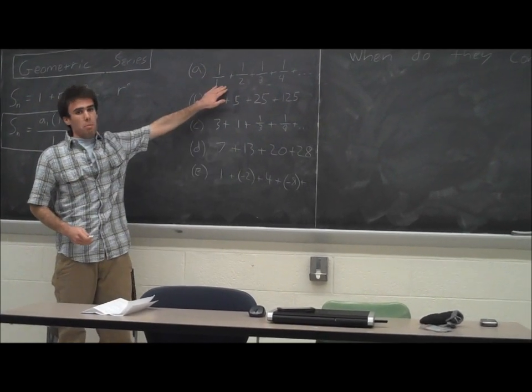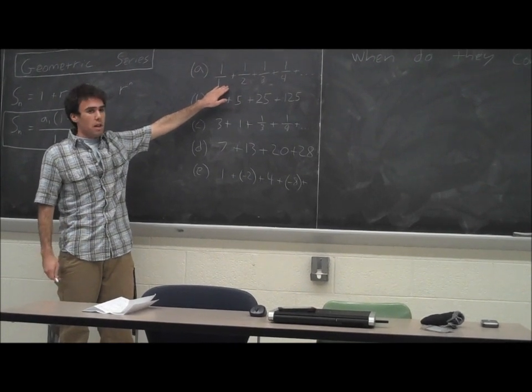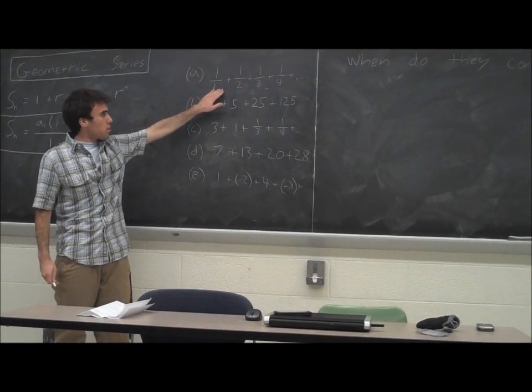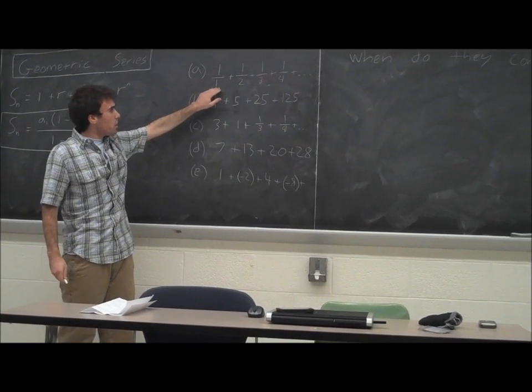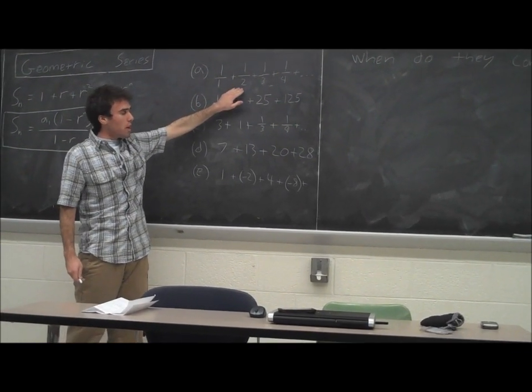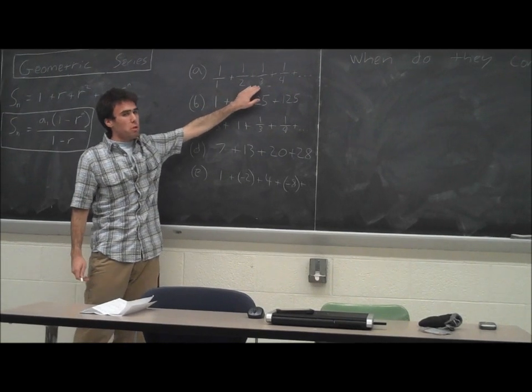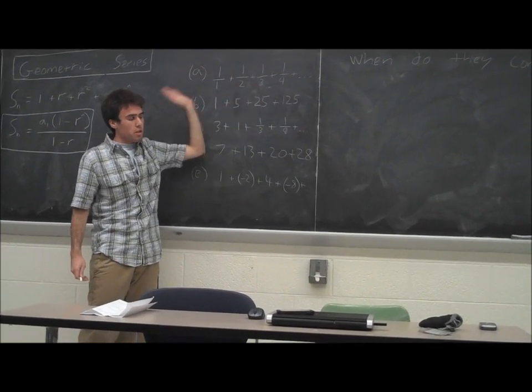So if we look at our first example, we can kind of see right away that it is not a geometric sequence, right? We can look at this and say, well, we have 1, and then we multiply by 1/2 to get to 1/2, but we don't multiply by 1/2 again to get to 1/3. So that's gone right away.